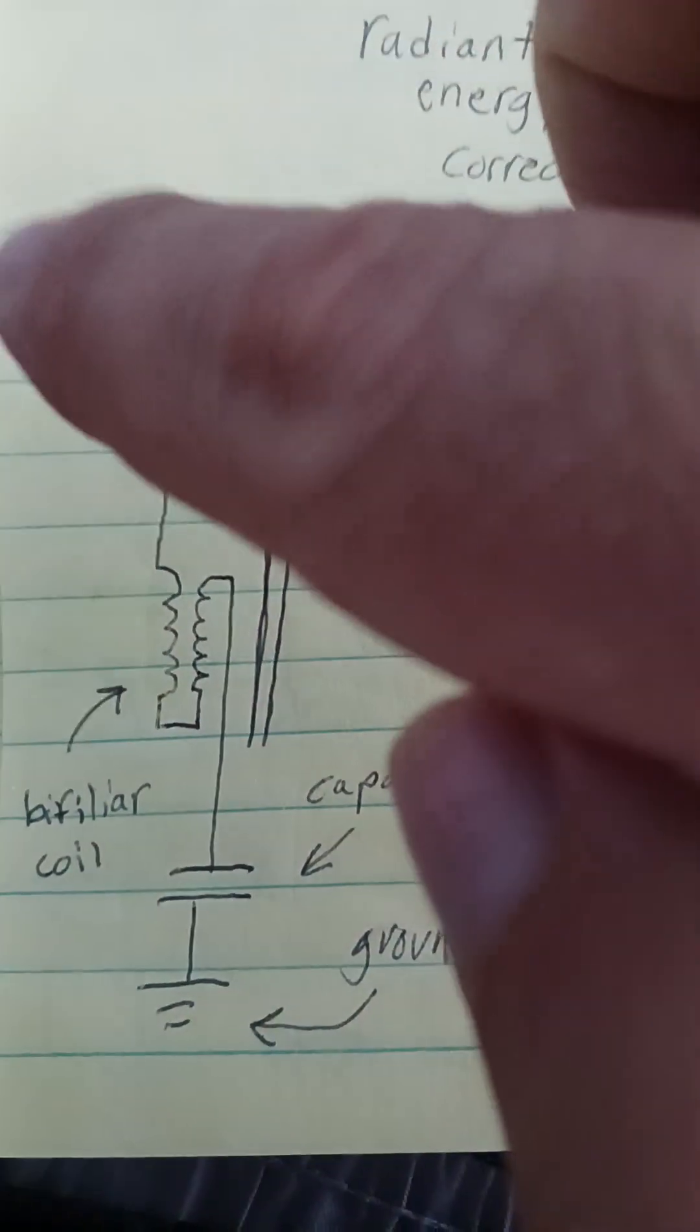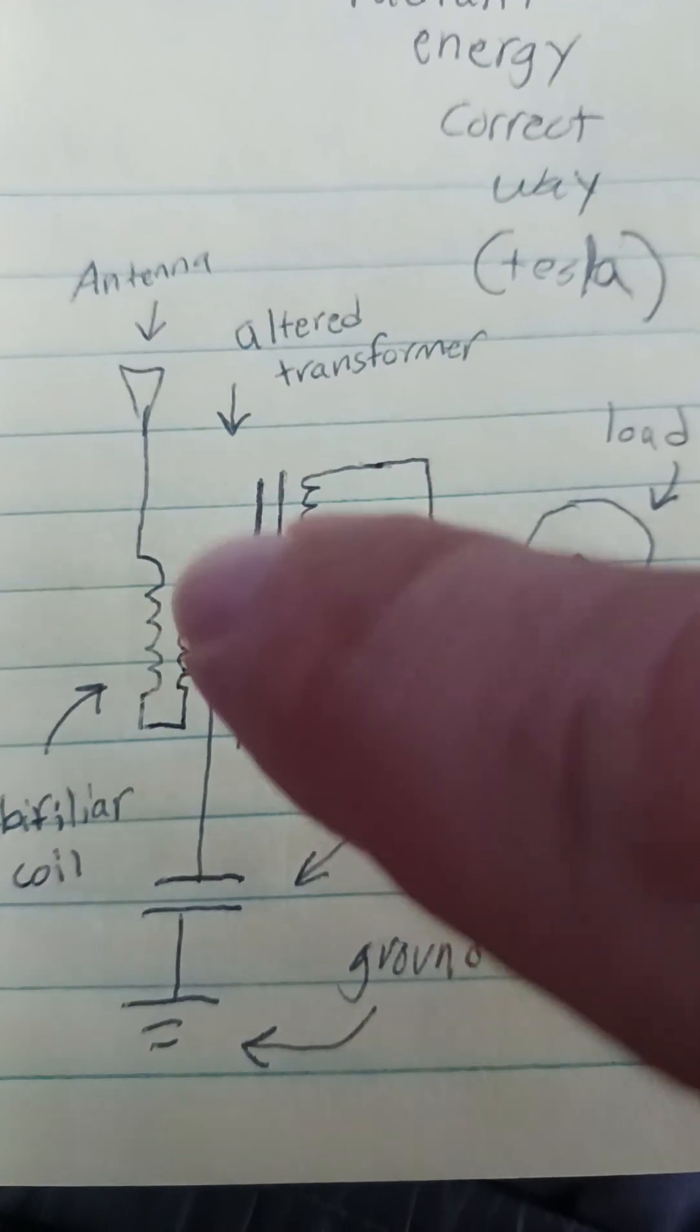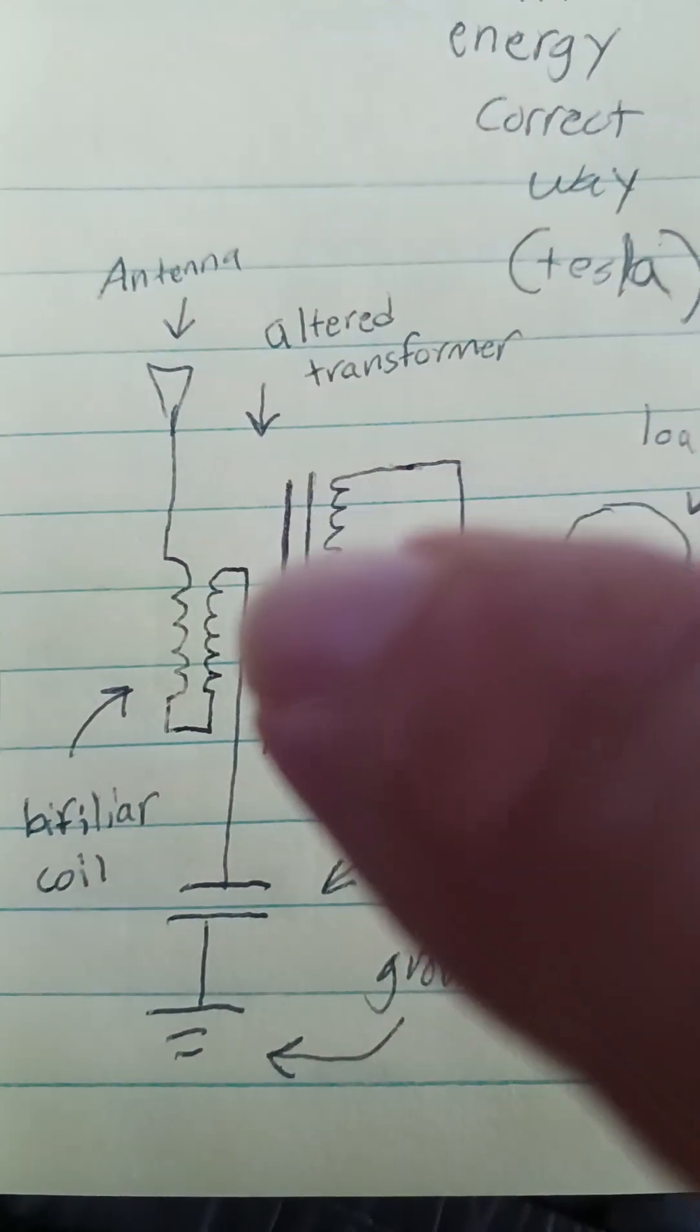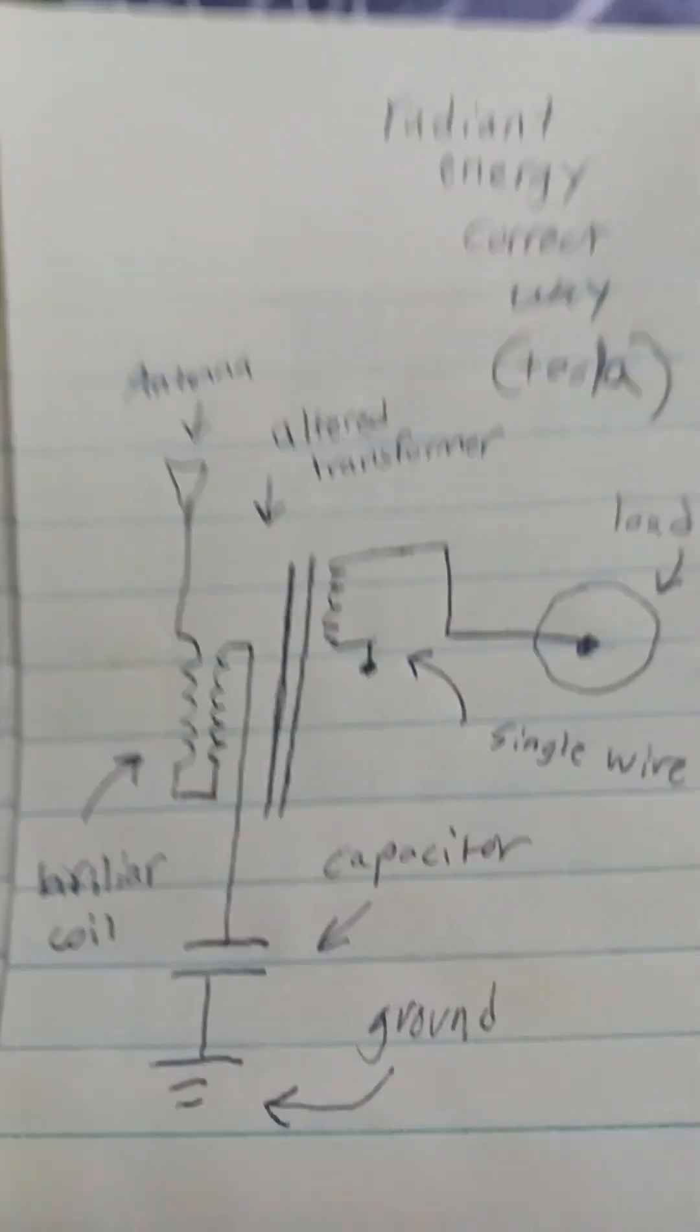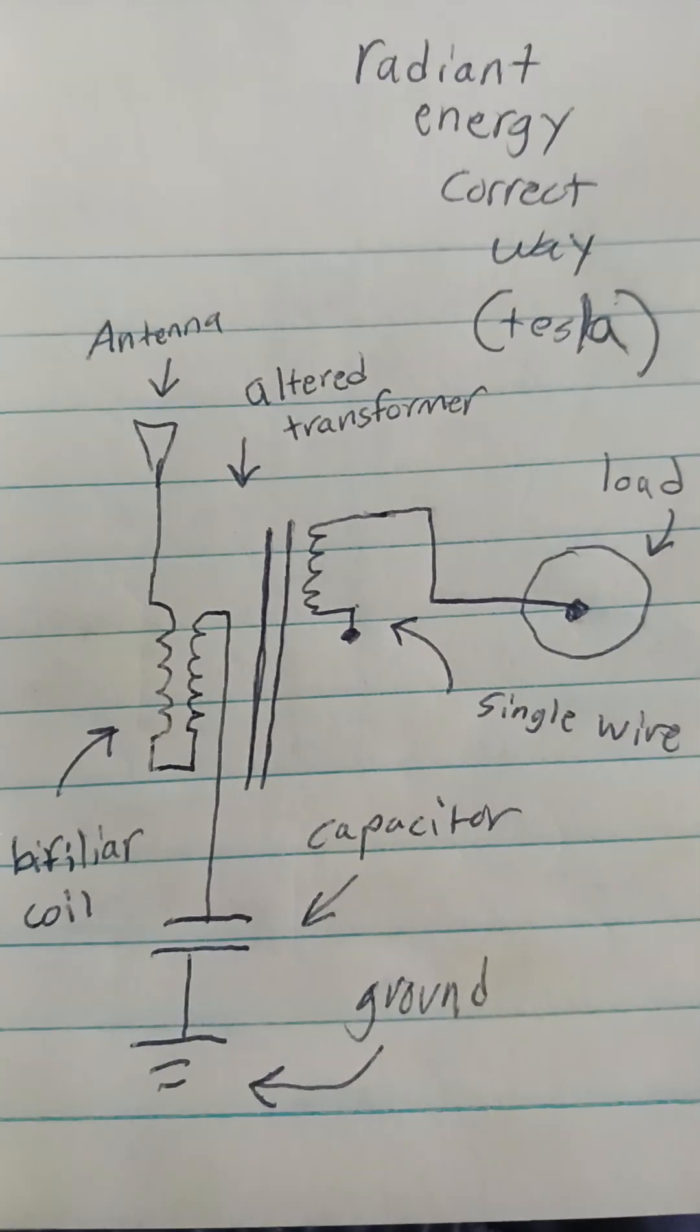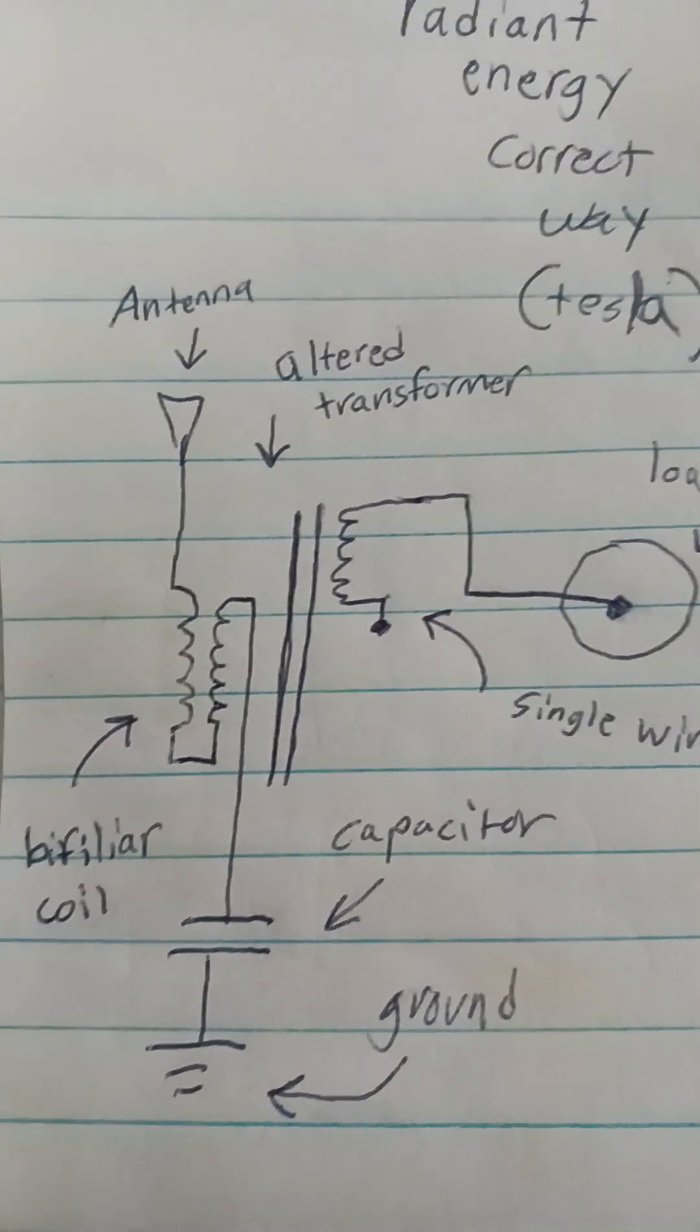There's a single wire. The radiant energy collector and source is a single wire that goes to a capacitor and a ground. It's a bi-filler coil that works as both elements in a conventional LC tank circuit—the inductance and capacitance.